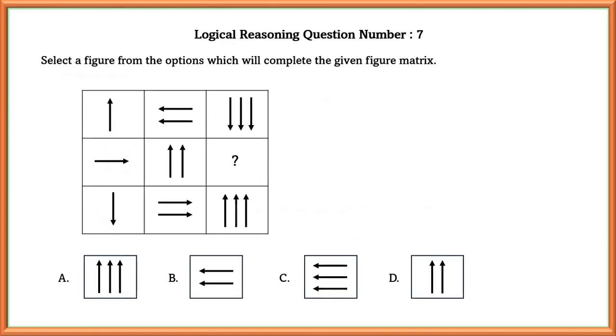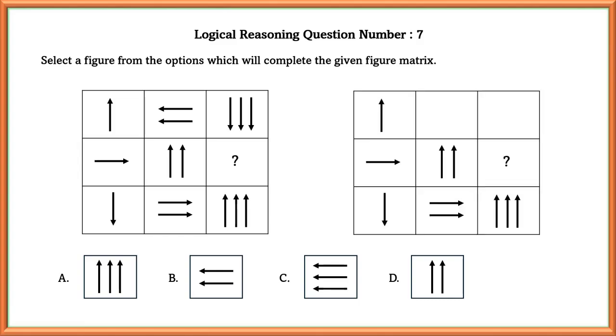Logical reasoning question number 7. Select a figure from the options which will complete the given figure matrix. In the first box, there is only one arrow pointing upwards. But in the second figure, we can see that the arrows are turned 90 degrees anticlockwise and they have doubled.